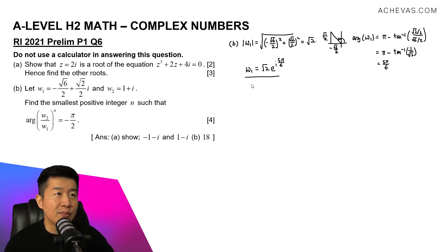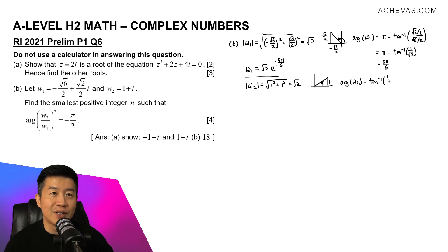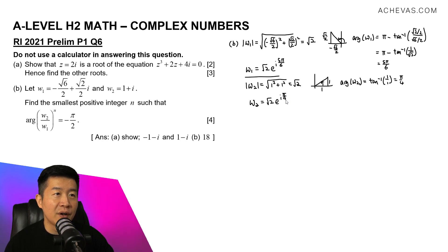For w2, the modulus = √(1² + 1²) = √2. Sketching on the Argand diagram, w2 is at (1, 1). The argument of w2 = tan⁻¹(1/1) = π/4. Therefore, w2 = √2 · e^(i·π/4).